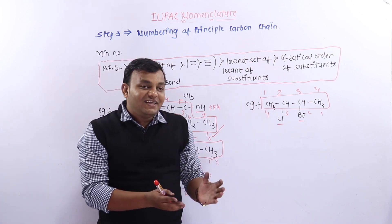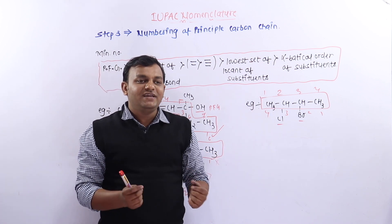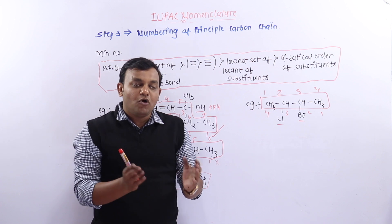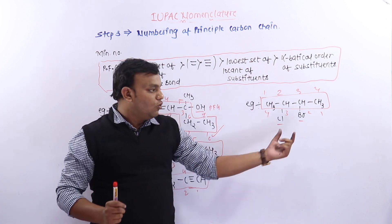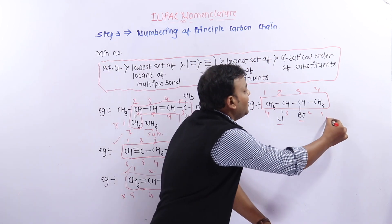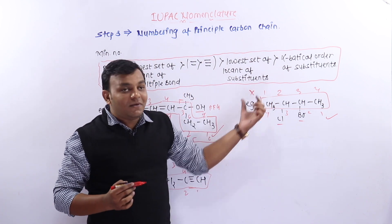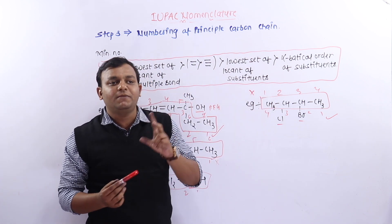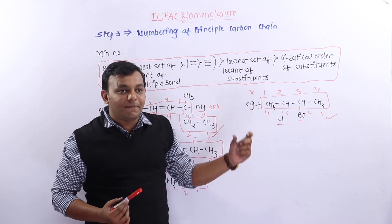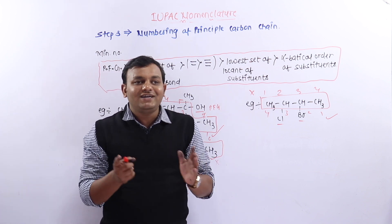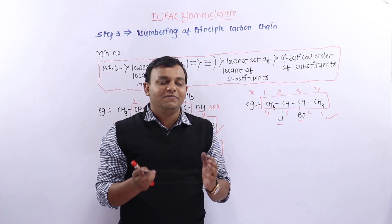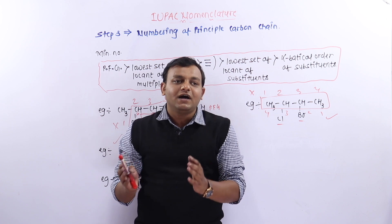तो मुझे alphabetically देखना पड़ेगा। Bromine का prefix होता है 'Bromo', Chlorine का prefix होता है 'Chloro'। Alphabetically Bromo का B पहले आता है Chloro के C से, तो Bromine को minimum number मिलना चाहिए। इसलिए जिस numbering में second position पर Bromine आ रहा है वो numbering सही है, और जिसमें second position पर Chloro है वो गलत है। If substituents are at the same number, we follow alphabetical order.